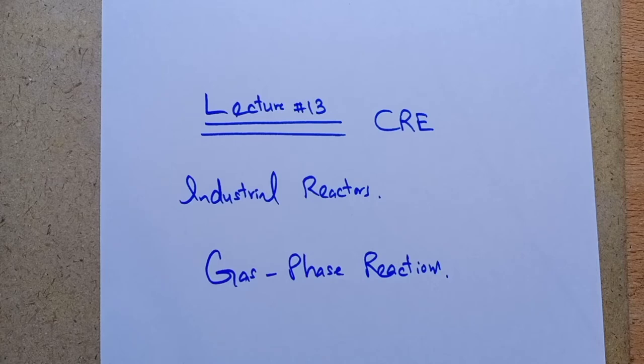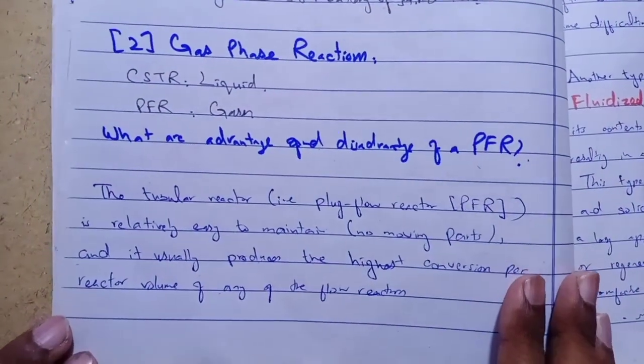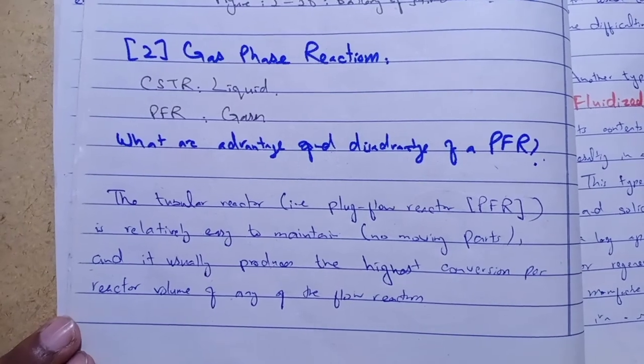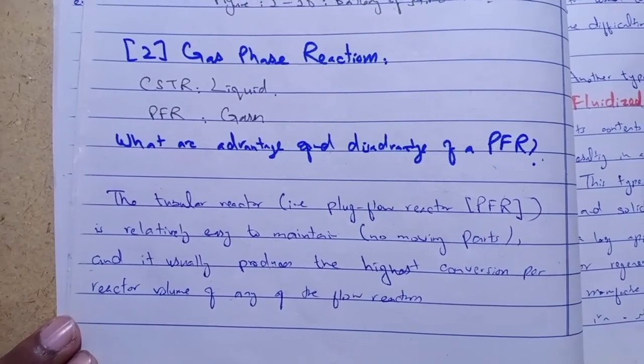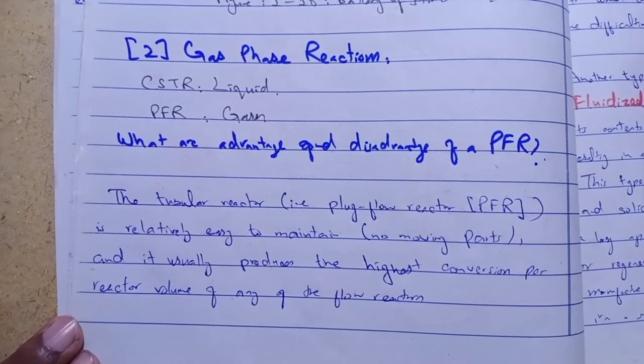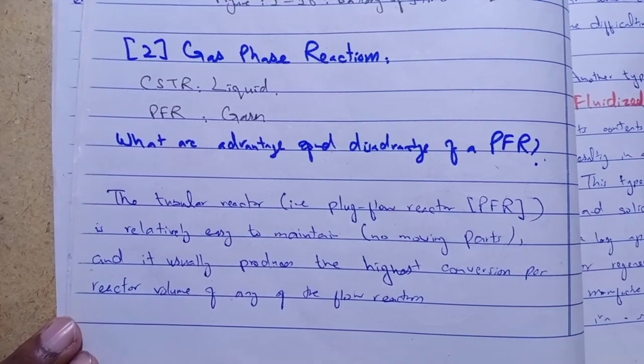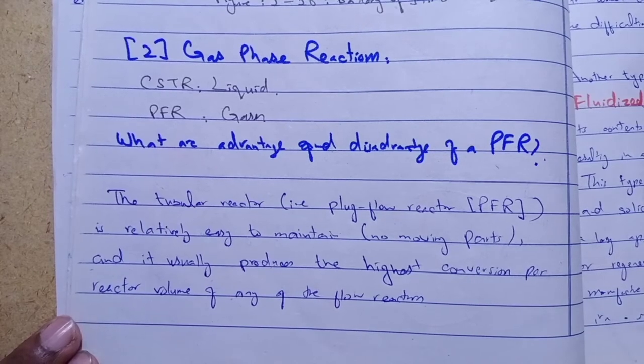Previously we discussed industrial reactors in liquid phase reactions, but in this video we discuss gas phase reactions — what are the advantages and disadvantages. Gas phase reactions basically consist of CSTR and PFR. CSTR is basically used for liquid phase reactions, while PFR and PBR are used for gas phase reactions.